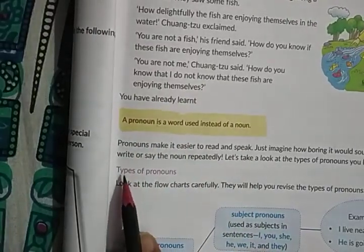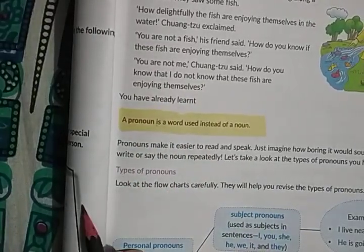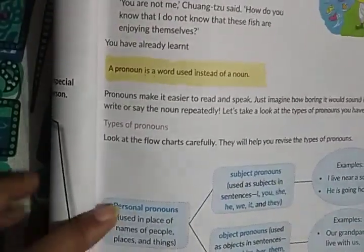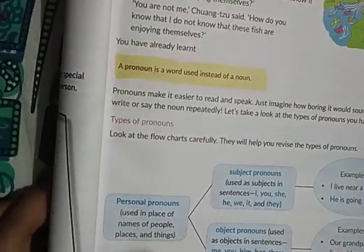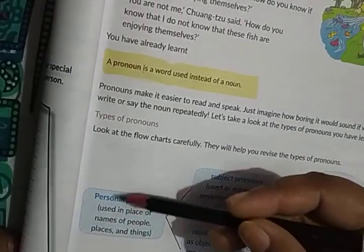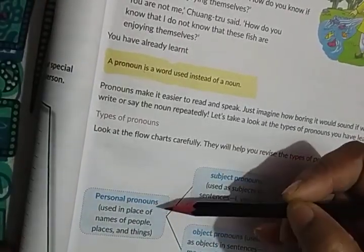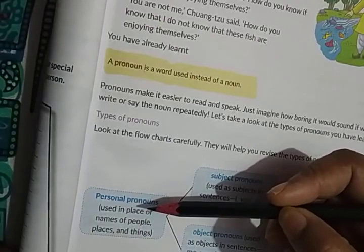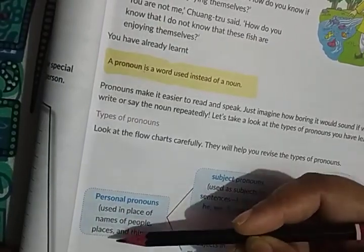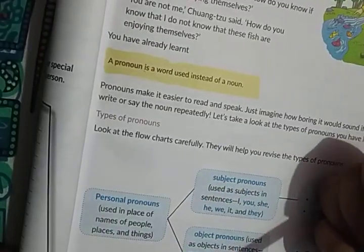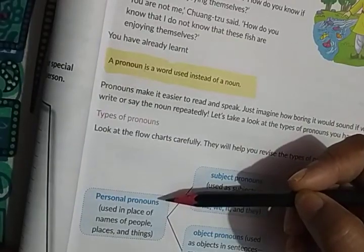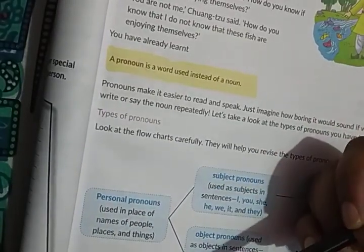Now we will deal with types of pronoun. The first type is personal pronoun. A personal pronoun is used in place of names of people, places, and things.